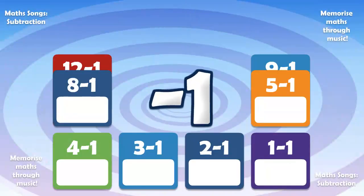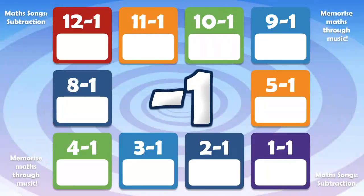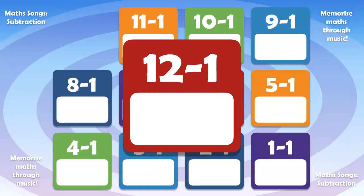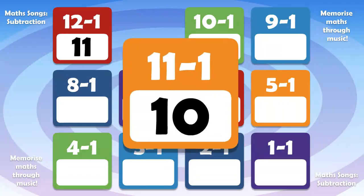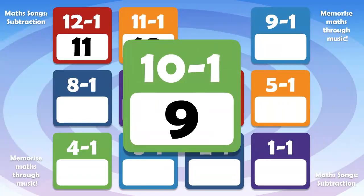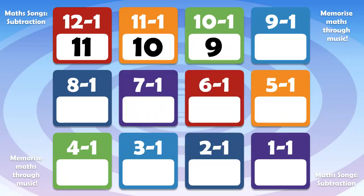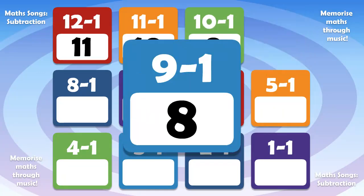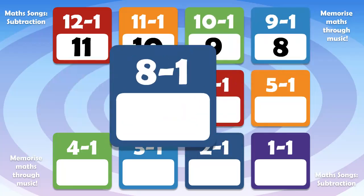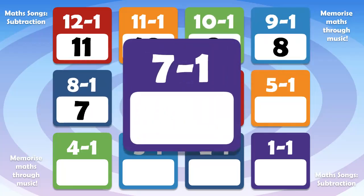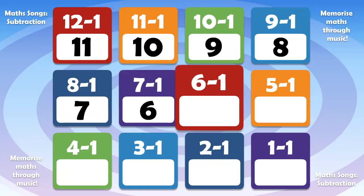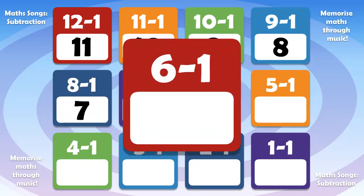Here we go. Let's subtract 1. 12 minus 1 is 11. 11 minus 1 is 10. 10 minus 1 is 9. 9 minus 1 is 8. 8 minus 1 is 7. 7 minus 1 is 6. 6 minus 1 is 5.